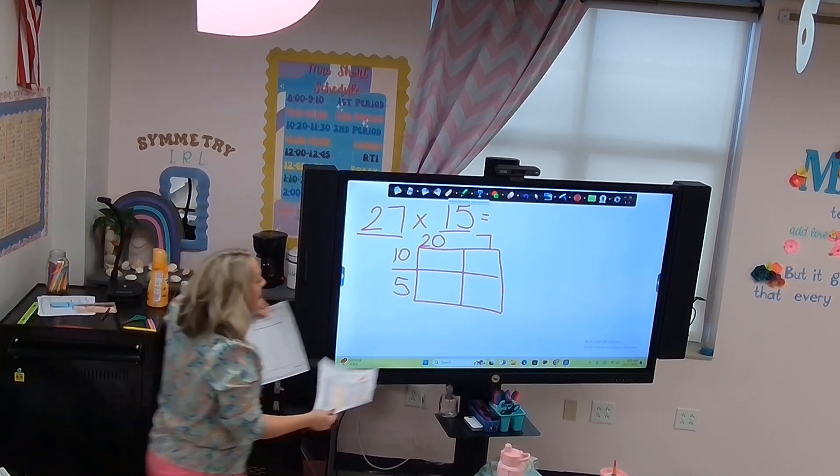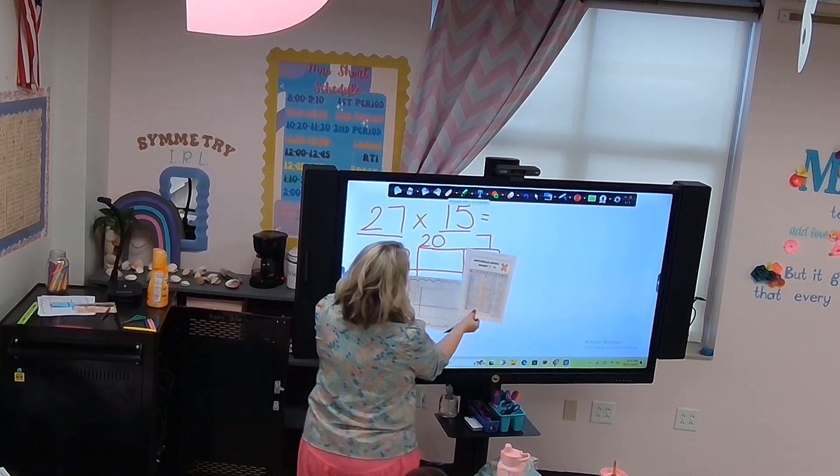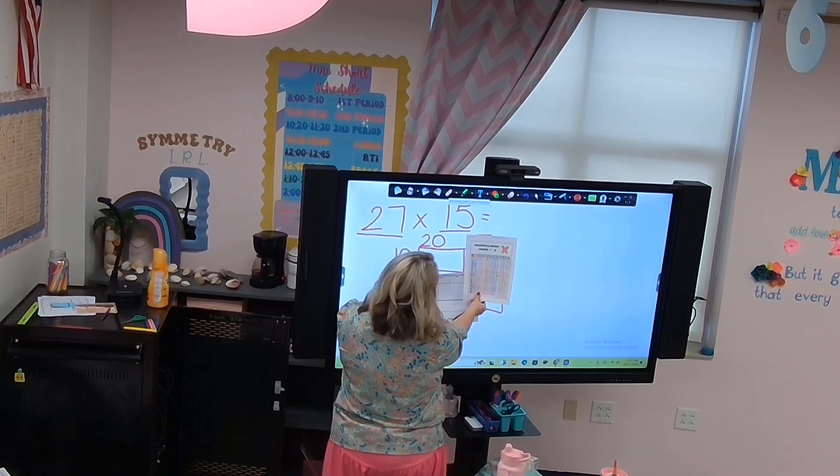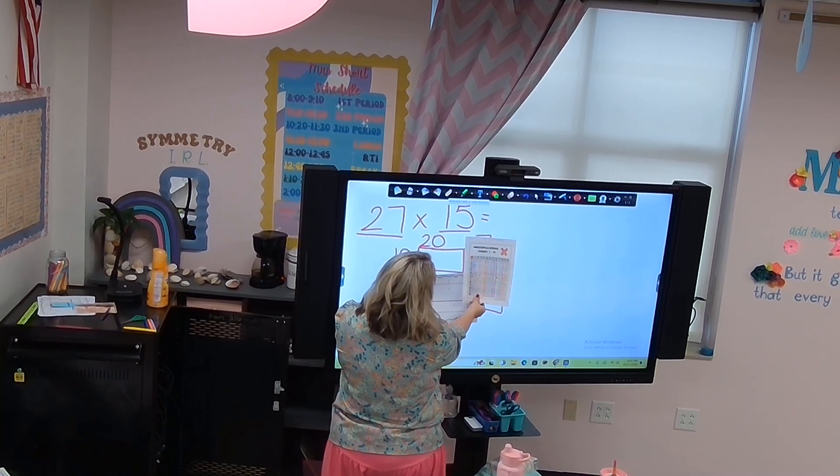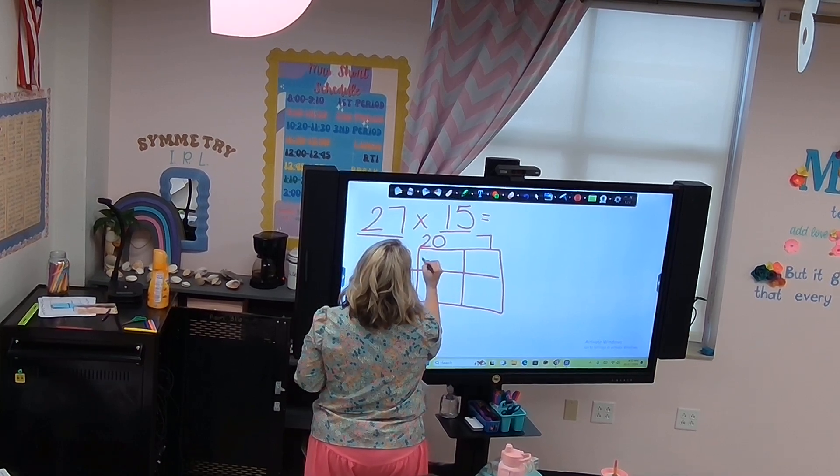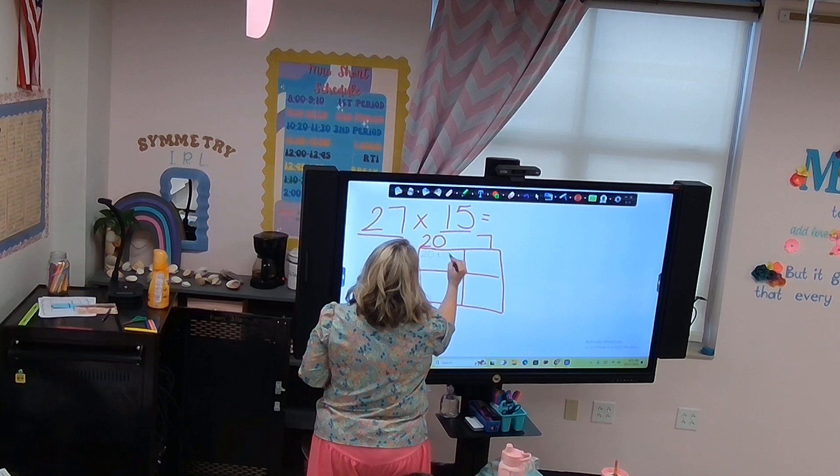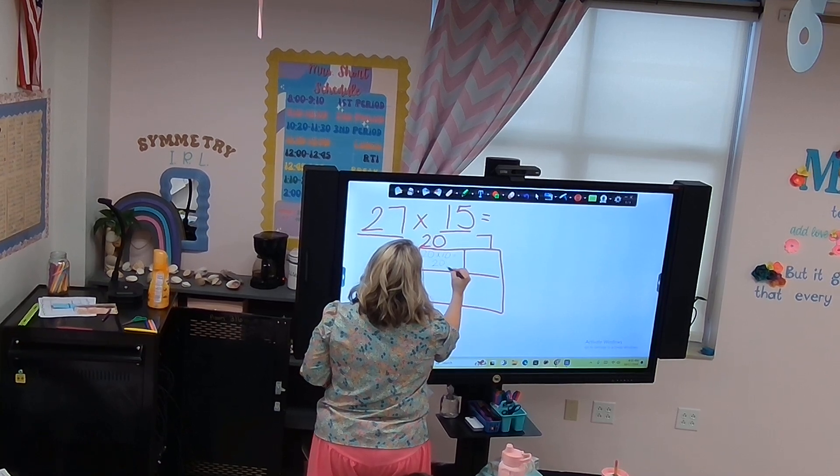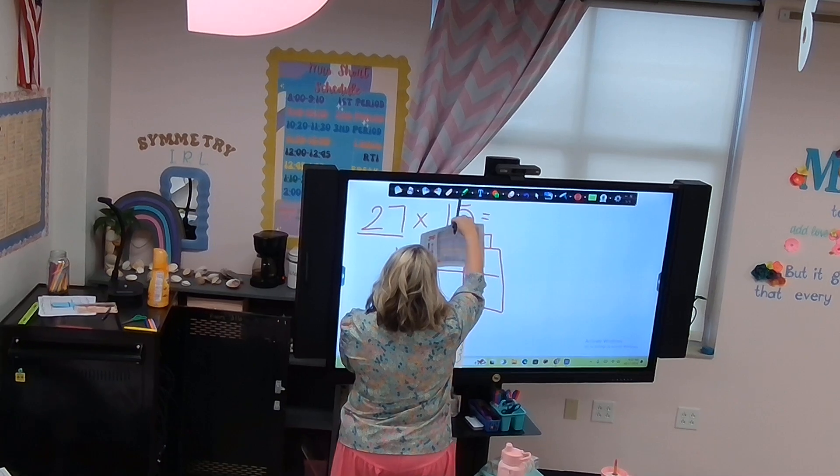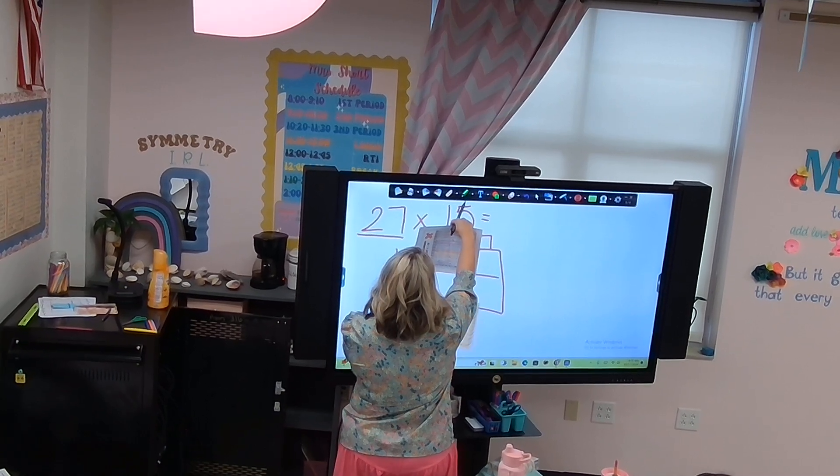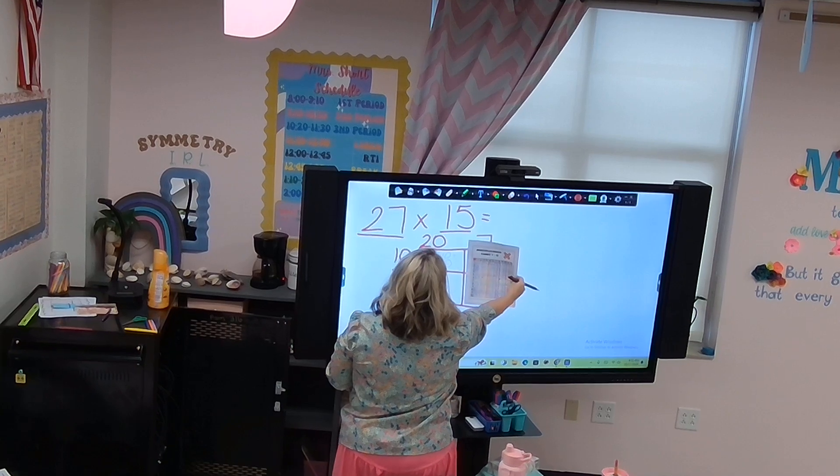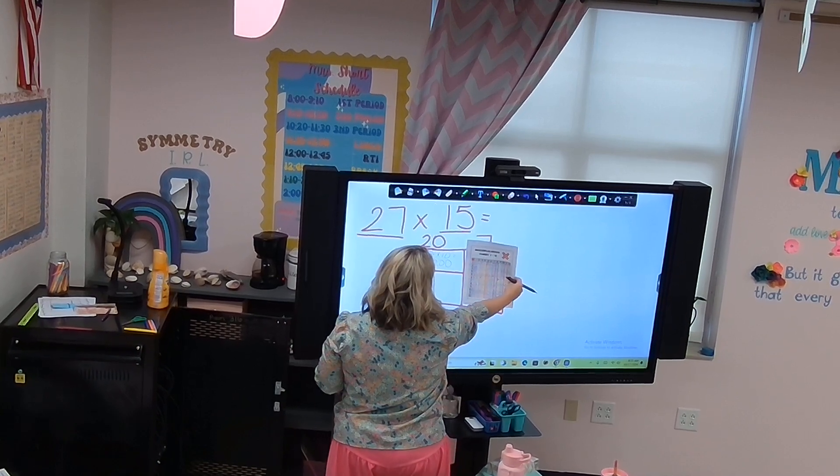So what two numbers are getting multiplied here? 20 times 10. That's the only two you can say. 200. Okay. Now let's go to this one. So what is going across here? 7 times 5. And then? 5 times 10.